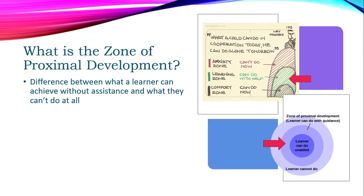So you have that inside ring — the comfort zone — then the learning ring, which is the Zone of Proximal Development, and then the outside ring, which is the anxiety zone, because you can't do that task even with help. Vygotsky said: 'What a child can do in cooperation today, he can do alone tomorrow.' That quote really hit home with me. Anyone who can do something in cooperation can learn how to do it alone.